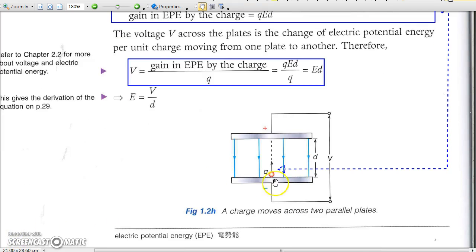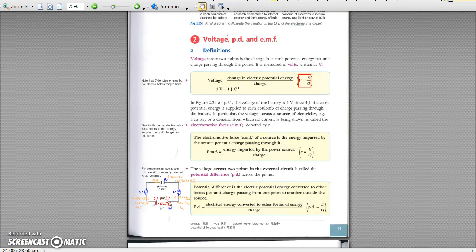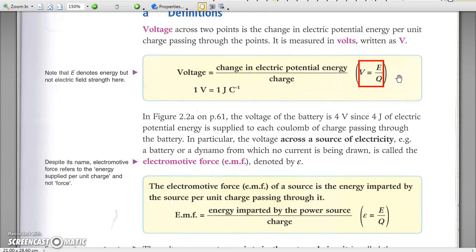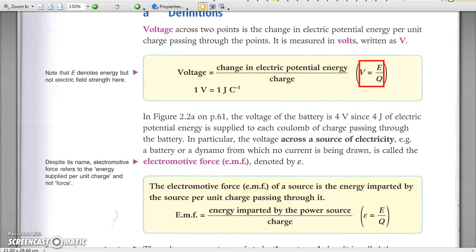On the other hand, a charge that moved from one plate to another also travels across a potential difference of V between the plates. And hence, its change in electrical potential energy is also given by EPE equals QV as on page 63.